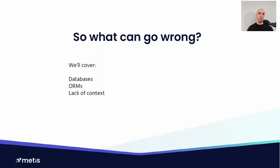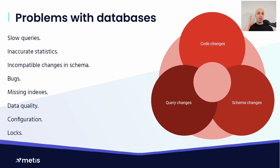We'll cover areas like databases, ORM libraries, and lack of context. Starting with databases: there are various things that may go wrong. First, code may change — you change how you talk to the database, what data you extract, because business requirements changed. This results in sending different queries, whether it's SQL, NoSQL, key-value store, or document DB. The other thing that may change is schema changes — adding a new column, removing a column, changing the column type.